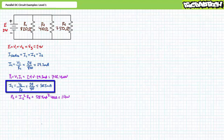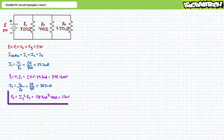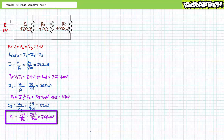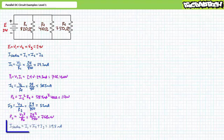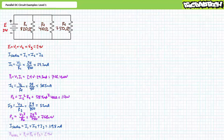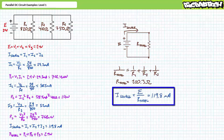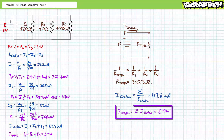I3 equals V3 over R3, yielding 32 milliamps. P3 equals V3 squared divided by R3, yielding 768 milliwatts. Source current equals I1 plus I2 plus I3, yielding 119.8 milliamps. Total power equals P1 plus P2 plus P3, yielding 2.9 watts. As a check, the three resistors combined in parallel yield a total resistance of 200.3 ohms; applying Ohm's law confirms a source current of 119.8 milliamps and total power of 2.9 watts.